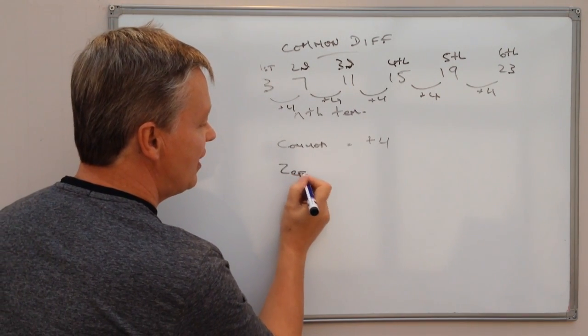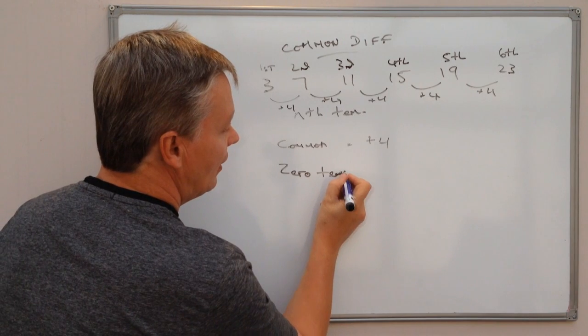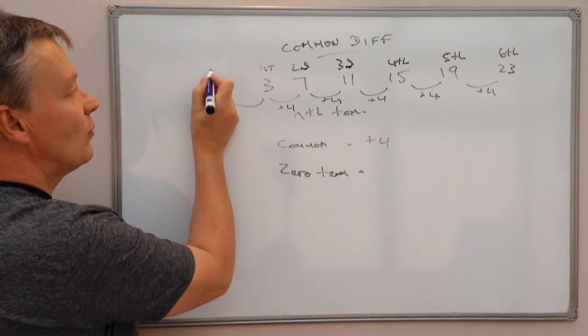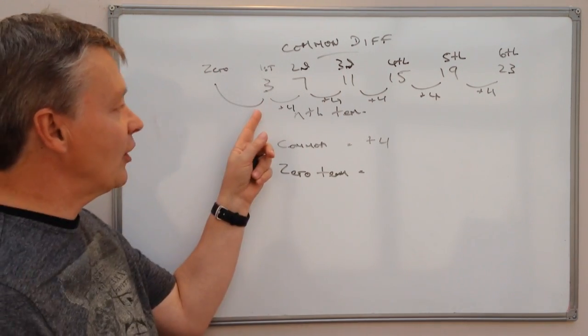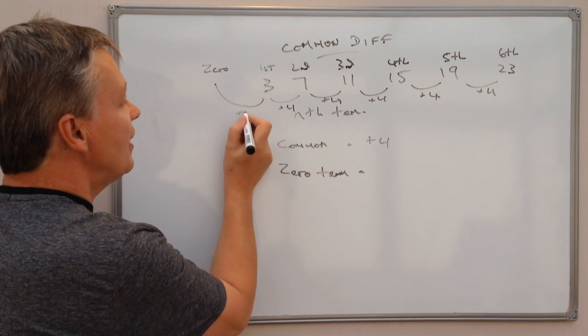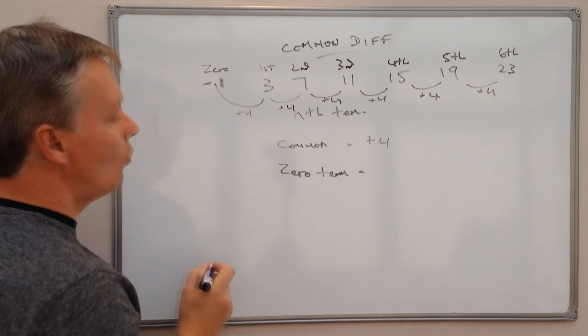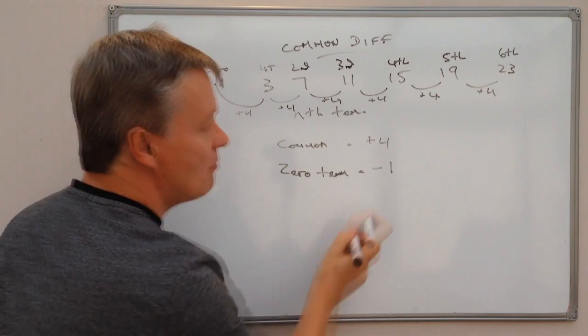And then the other thing we need to know is something called the zero term. The zero term is the one here. And if I have a common difference of 4, the zero term on this particular sequence is going to be minus 1.